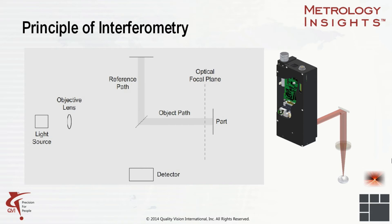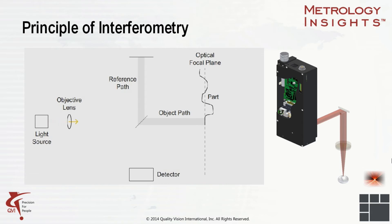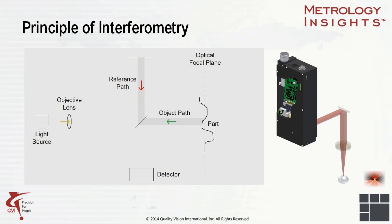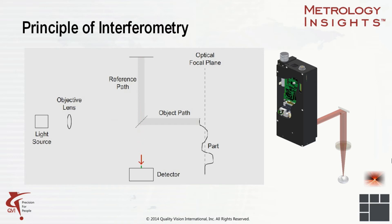Let's look more closely at the principles behind interferometry. A light source gets projected down onto the part, and then it is received back up as two opposite paths. Depending on the timing between when those signals are received, the detector can tell how far away it is from the part. Shown here, we are scanning a part. As the part moves further away, you see the arrows coming back to the detector at different times — sometimes the green arrow is first, and sometimes the red arrow is first.